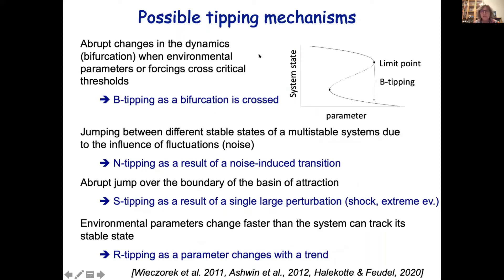Possible tipping mechanisms were already discussed here. There is a wonderful classification contributed by Peter Ashwin and coworkers: bifurcation-induced tipping or B-tipping, where we go over a bifurcation; noise tipping, which is a noise-induced transition; S-tipping or shock tipping, where a single large perturbation brings us over the basin boundary; and rate-induced tipping, where parameter changes trending too fast mean the system cannot track its stable state. I will concentrate on methods for the last two: S-tipping and R-tipping in highly multi-stable systems.